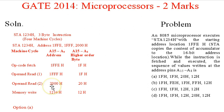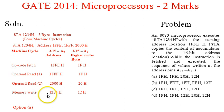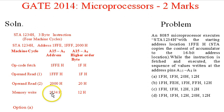The next address after 1FFFH is 2000H. The upper byte of 2000H is 20H — that is the value for operand read 2. The last machine cycle is memory write, which writes to the address 1234H. So the upper byte for the memory write is 12H.